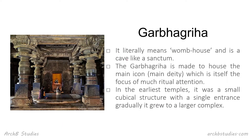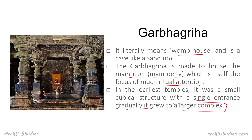The first term is Garbhagriha. It literally means the womb house and is a cave-like sanctum. The Garbhagriha is made to house the main icon — the main deity or god/goddess — which is the focus of main ritual attention. In the earliest temples it was a small cubical structure with a single entrance, and gradually it grew into a larger complex. The deity kept inside is what defines the Garbhagriha.